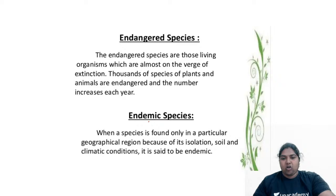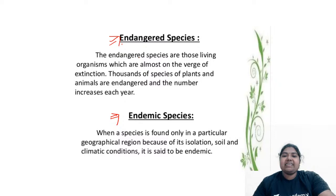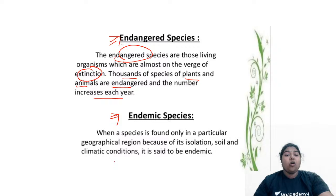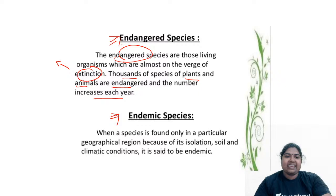Based on these risks you should be careful with organisms so that you can conserve them. Two terms are very commonly used — one is endangered species, the other is endemic. Endangered species are those about to go extinct — they are on the verge of extinction. Thousands of species of plants and animals are endangered, and every year the number is increasing.